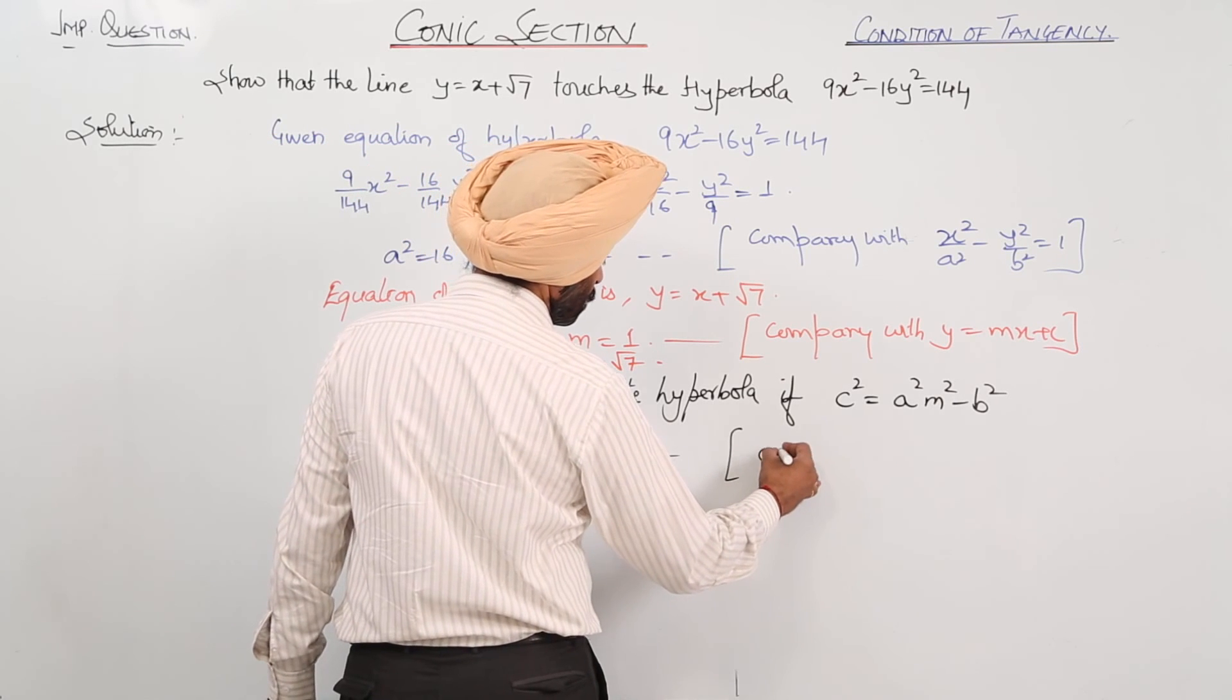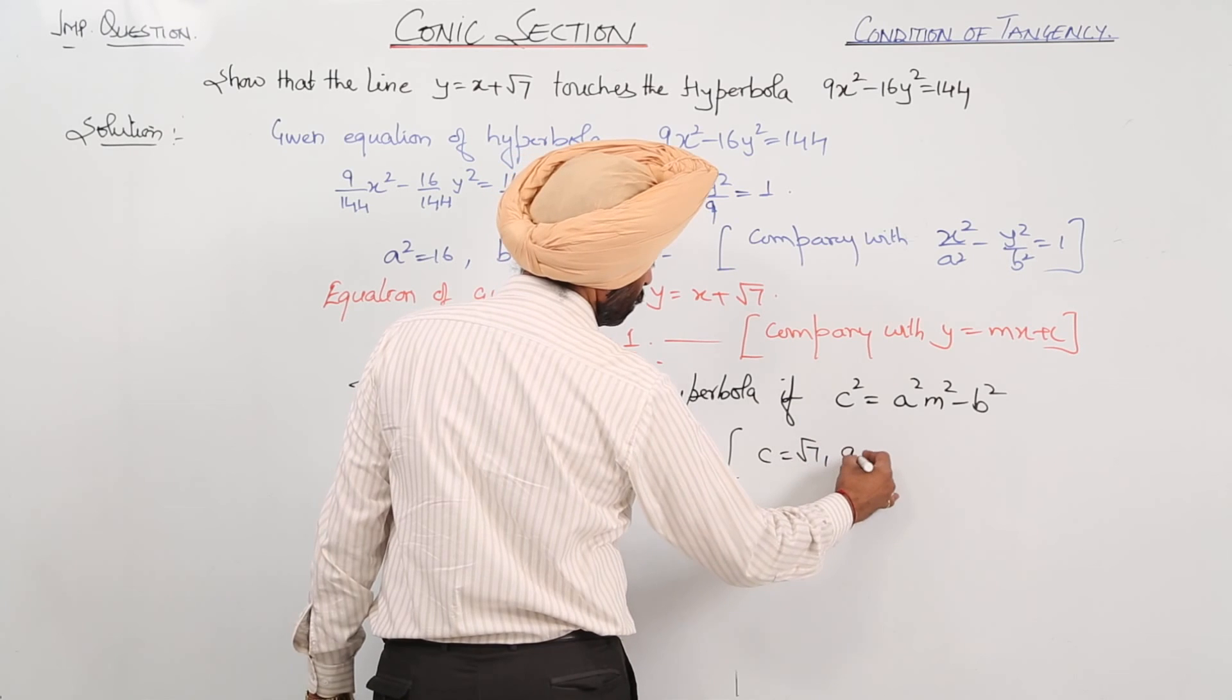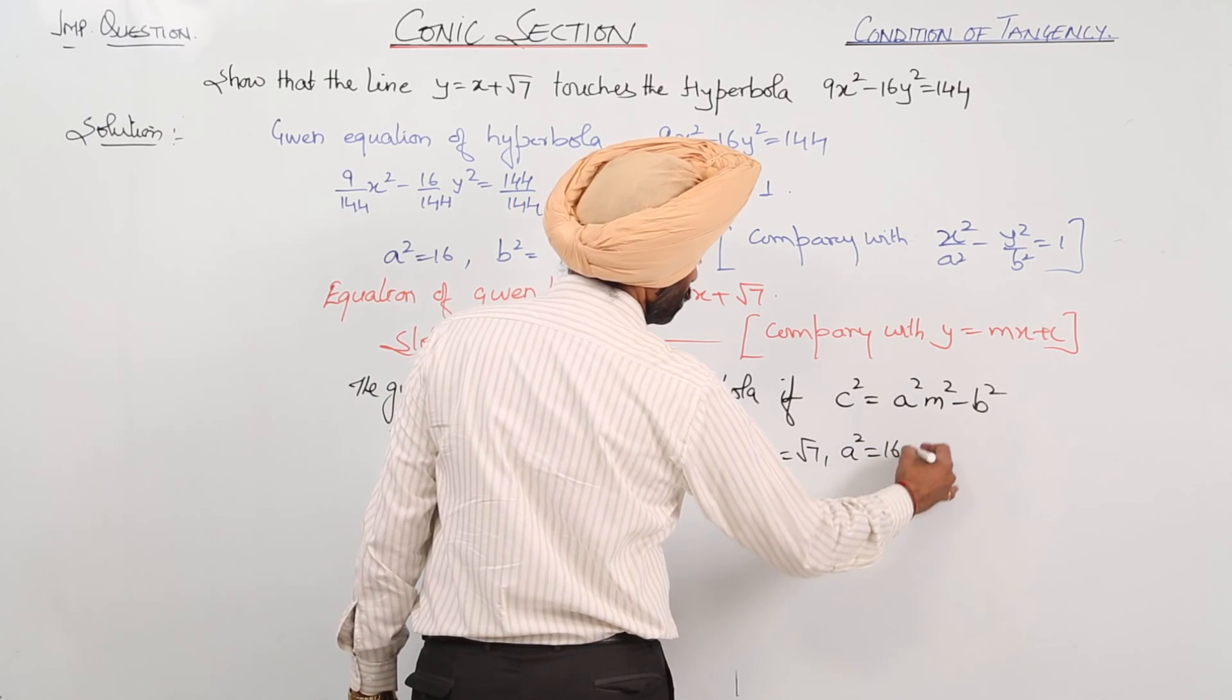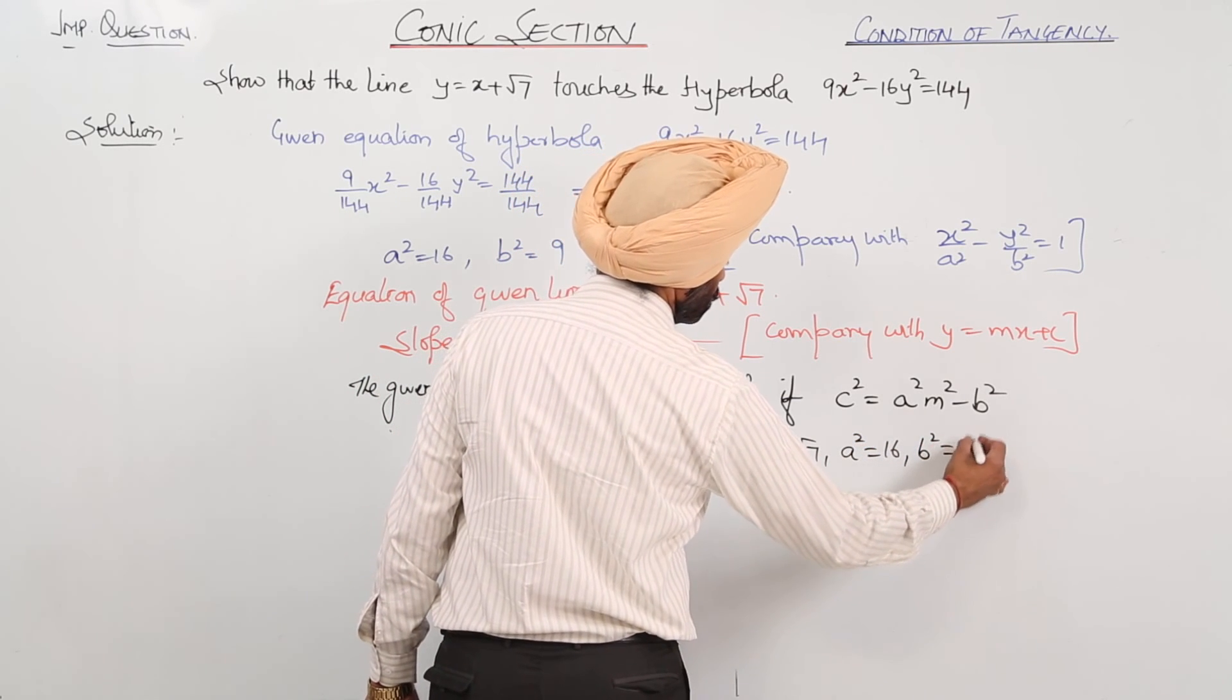We have c equals root 7, a square equals 16, and b square equals 9.